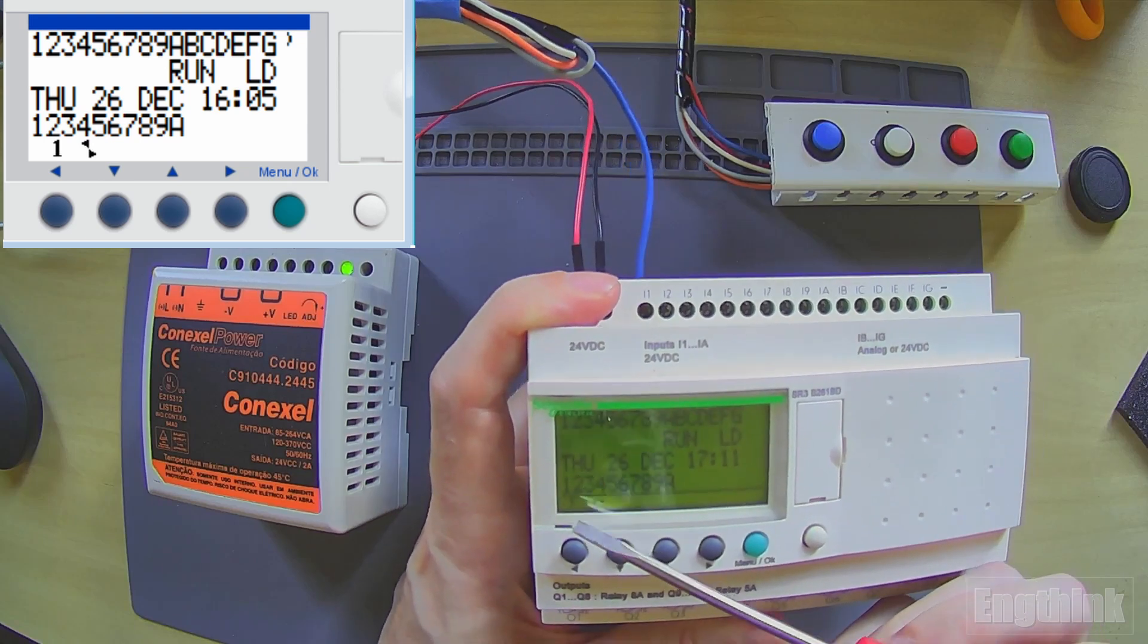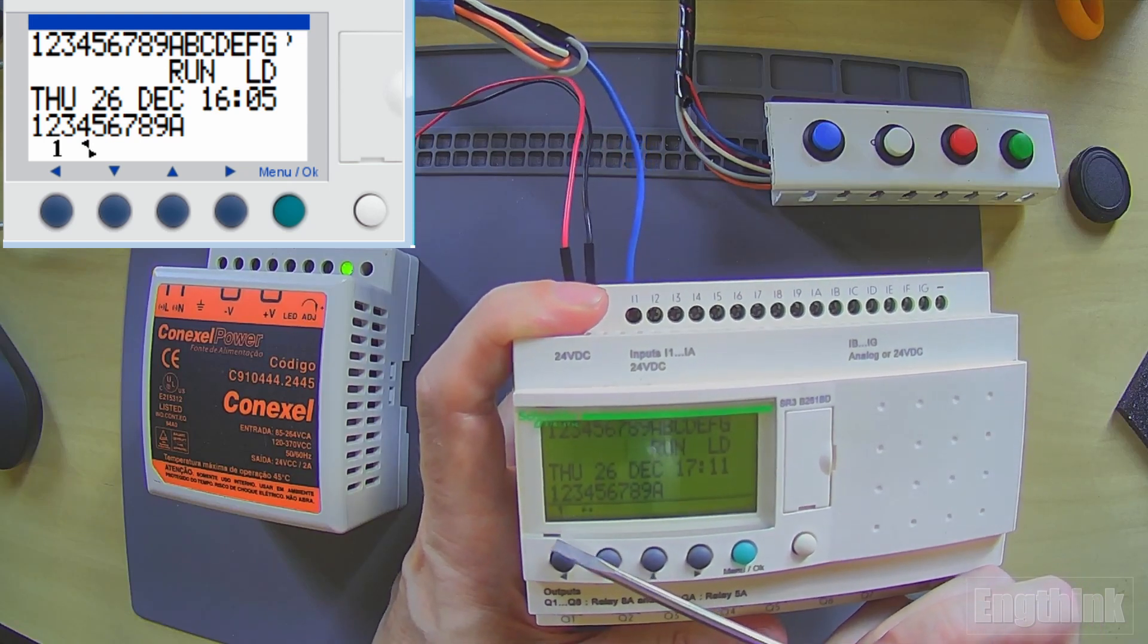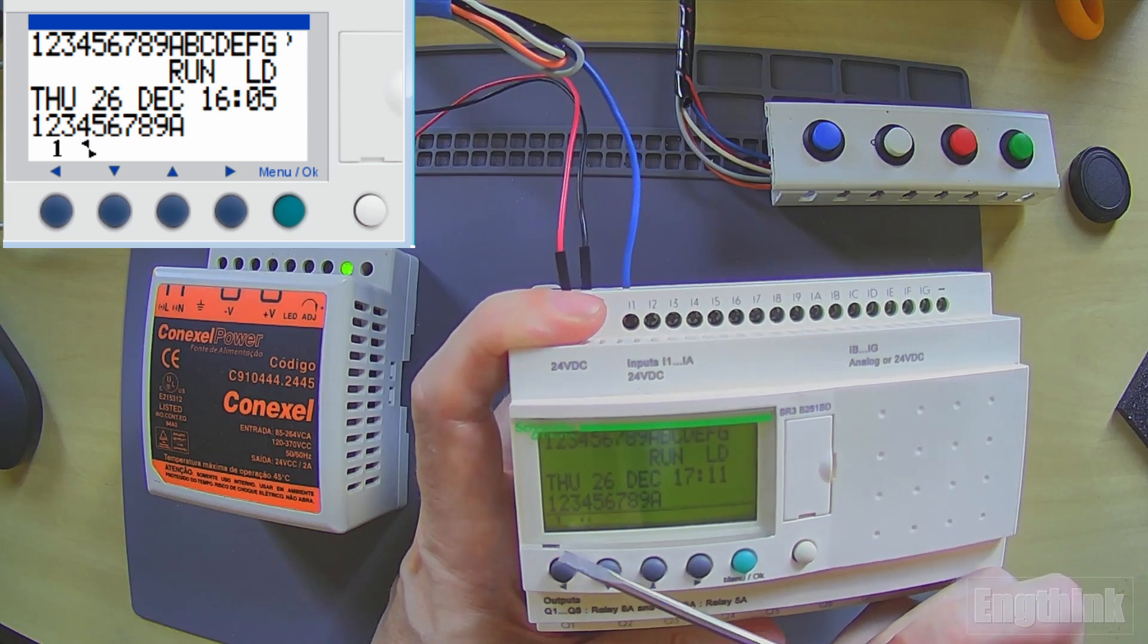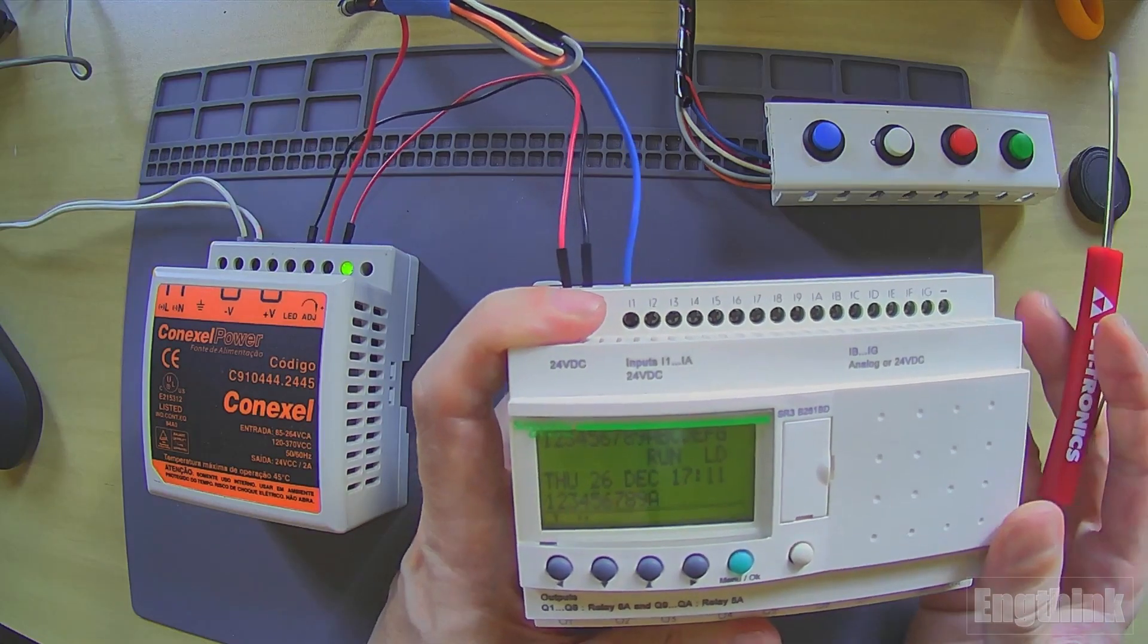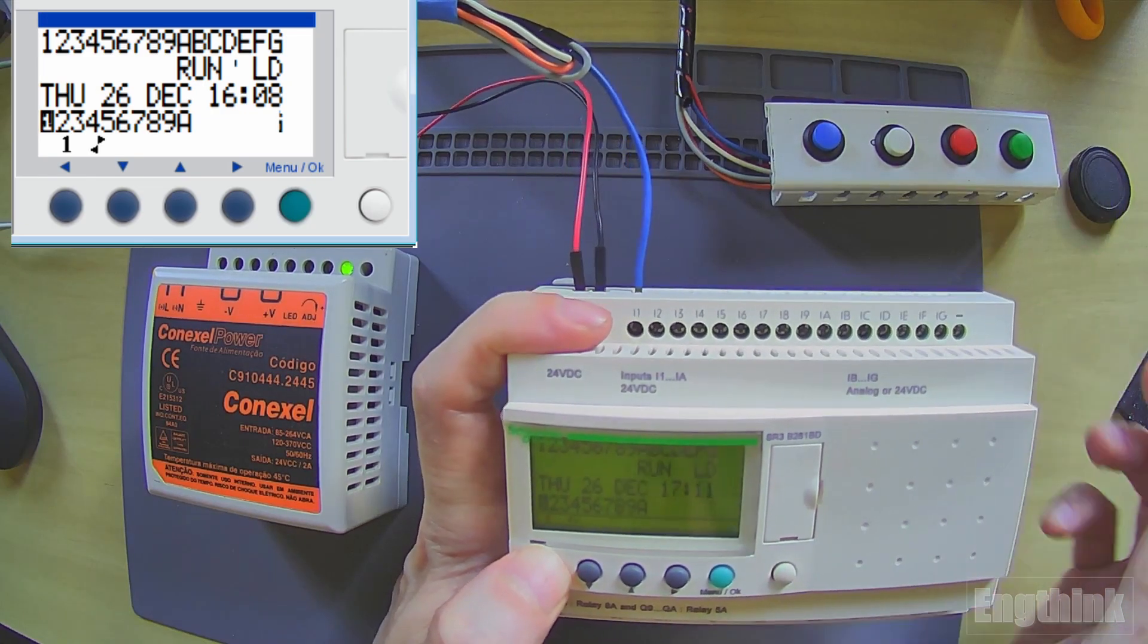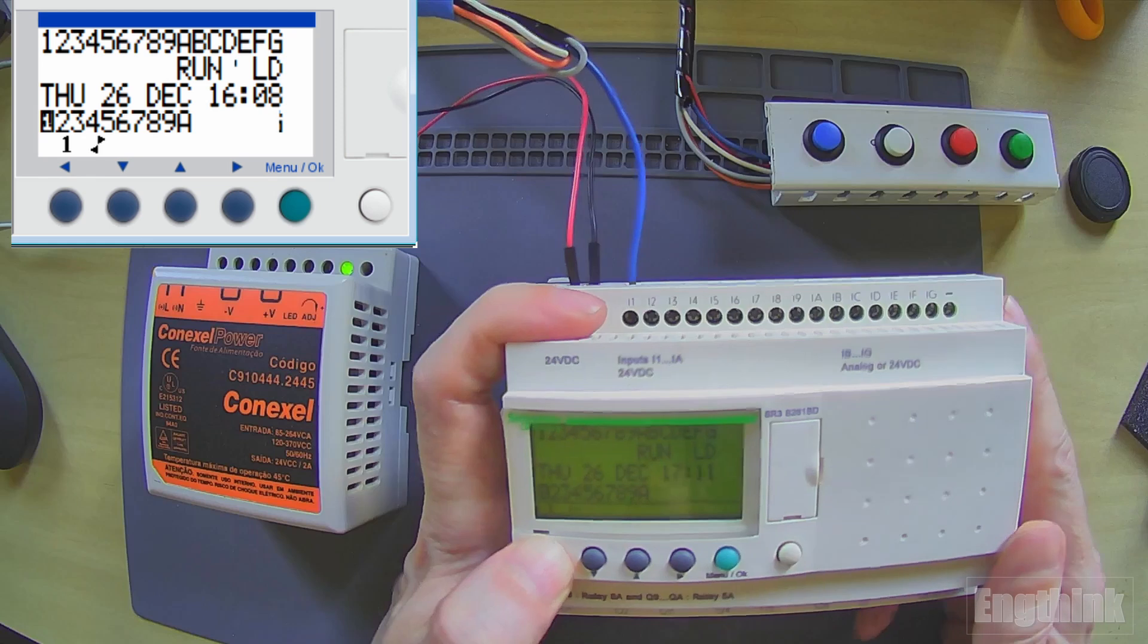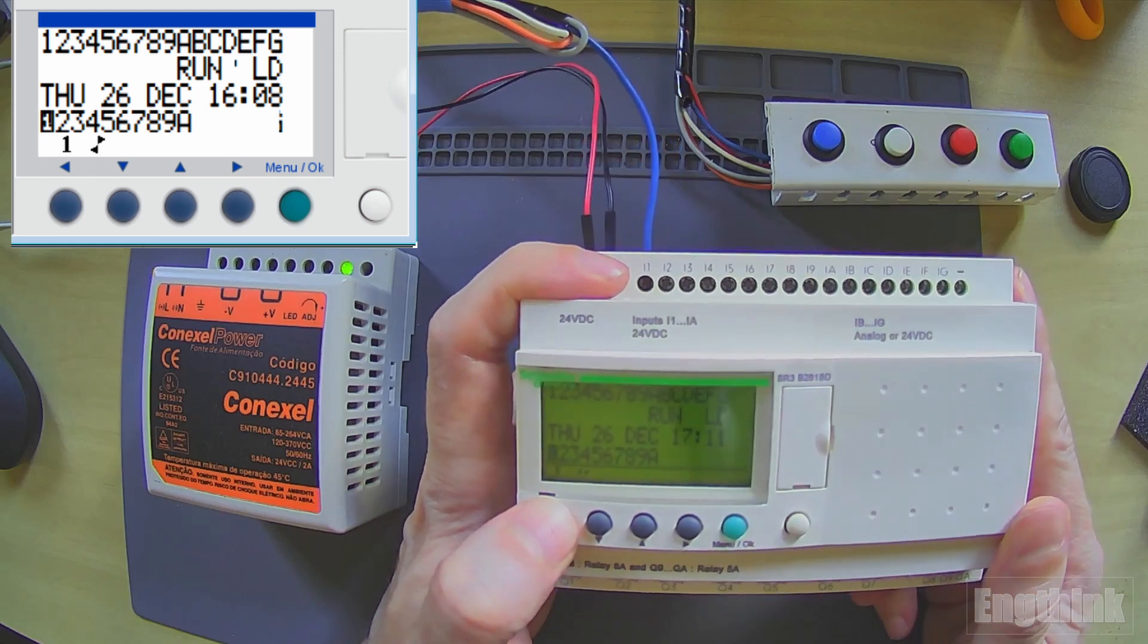As you can see at the bottom of the display, we have the number 1 displayed. That means that this key has some function in the program. Now let's press the button and we can see that we have the activation of the digital output.